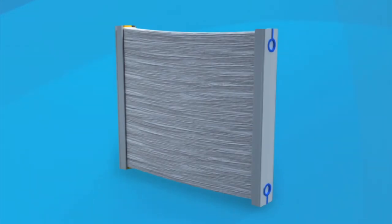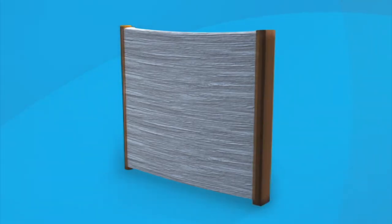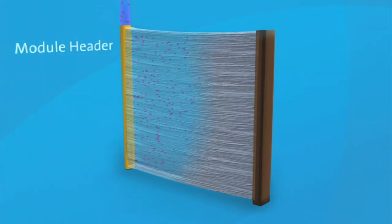The membranes are arranged horizontally into modules. Each module contains 30,000 membrane fibers held by resin at each end. The membrane fibers connect to a single common module header. This is where the filtrate is collected.